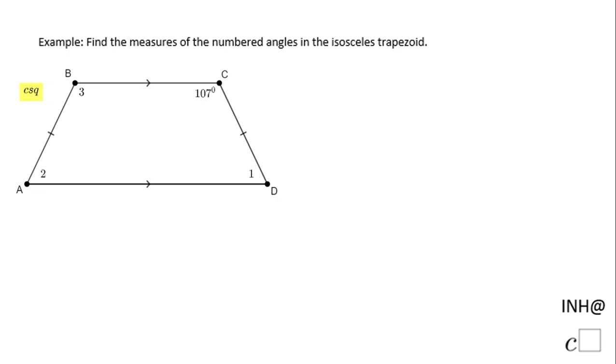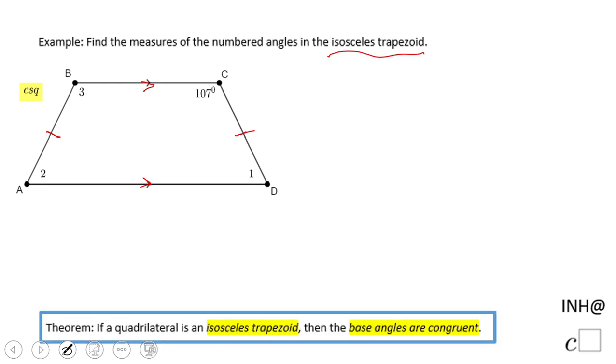Welcome back to I Need Help at C Square. In this example, we have an isosceles trapezoid. These two segments, which are the bases, are parallel, and these two segments, which are the legs, are congruent. That makes this an isosceles trapezoid. One property of an isosceles trapezoid is that the base angles are congruent: angle A is congruent to angle B and angle C.